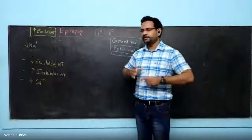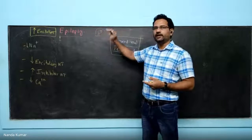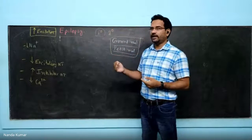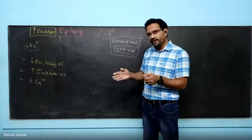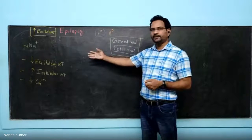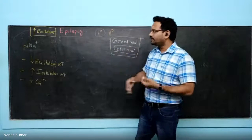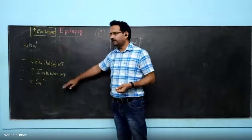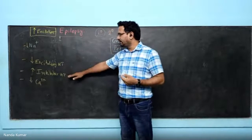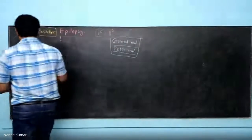You need to understand the pathophysiology — what goes wrong in the disease. It is because of continuous neuronal firing and activation, caused either by opening of sodium channels, calcium channels, excessive activation of excitatory neurotransmitters, or reduction in inhibitory neurotransmission. So you need to block sodium or calcium channels, decrease excitatory neurotransmitter activity, or increase inhibitory neurotransmission. We have different classes of drugs for each of these.